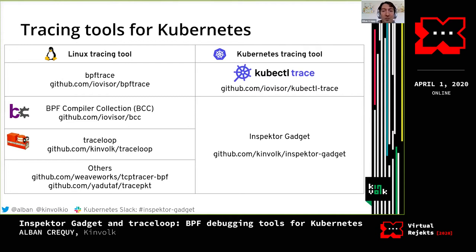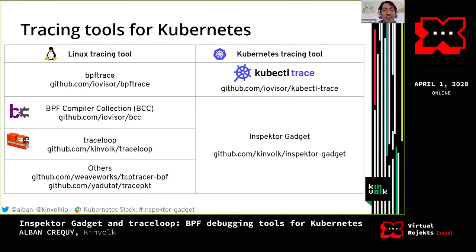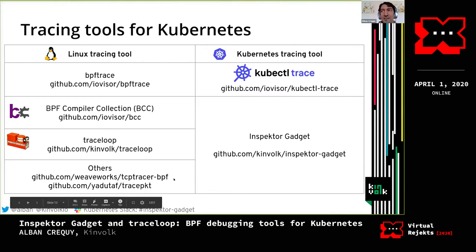There are already some tools doing that. For different BPF and Linux tracing tools, there is kubectl-trace and Inspector Gadget, which are two projects that are quite similar and expose those tools at the Kubernetes level. For example, BPFtrace — if you want to use that on Kubernetes, you can use kubectl-trace. For the different BPF Compiler Collection tools, BCC, Inspector Gadget actually reuses a lot of them. Inspector Gadget uses BCC, TraceLoop, and some others — for example, TCP-tracer BPF is useful to make network policies with Inspector Gadget.